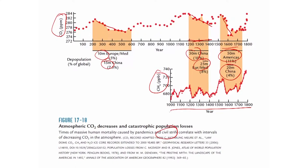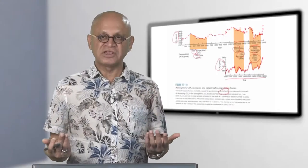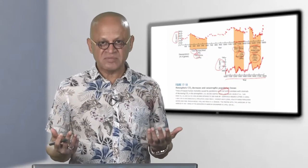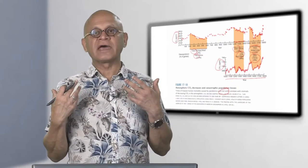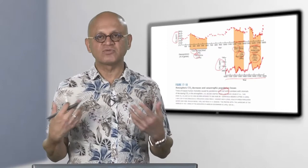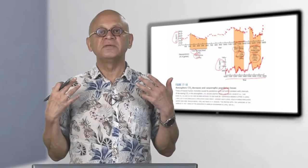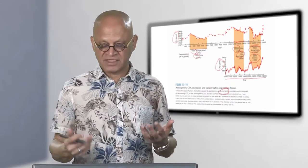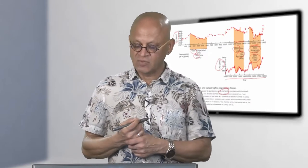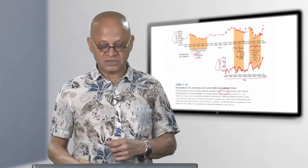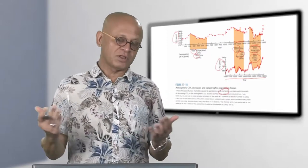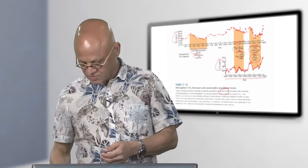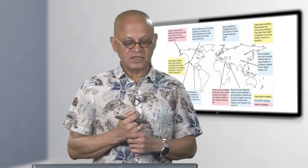The CO2 dip signal is visible but not dramatic, since methane has a shorter atmospheric residence time. Abandoned agricultural land can also create swamps and wetlands, which in turn produce methane — adding complications to the methane signal. This kind of human impact is technically detectable, but is obviously not comparable to the scale of modern global warming.